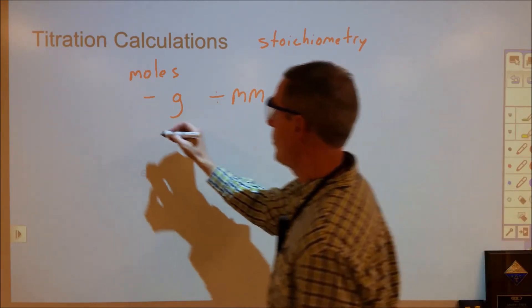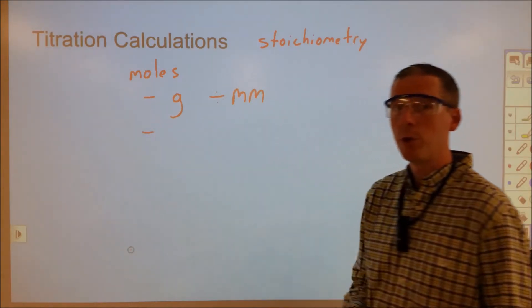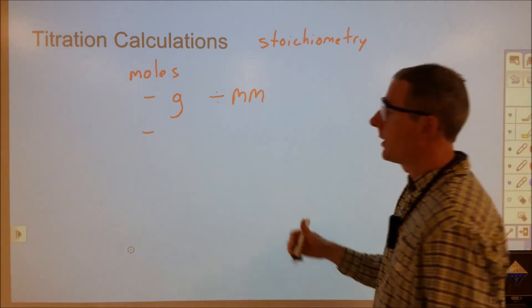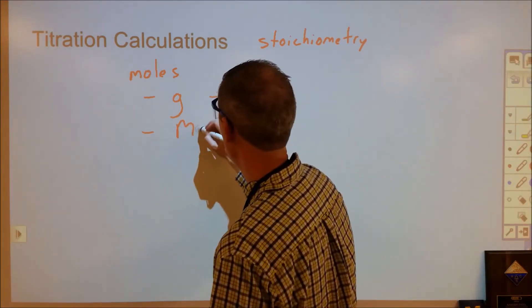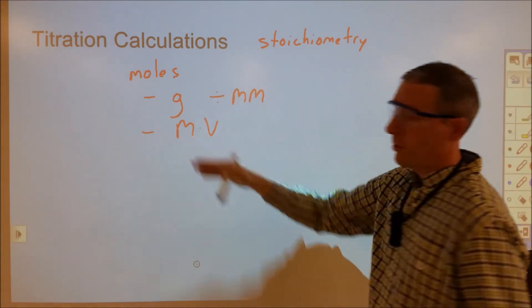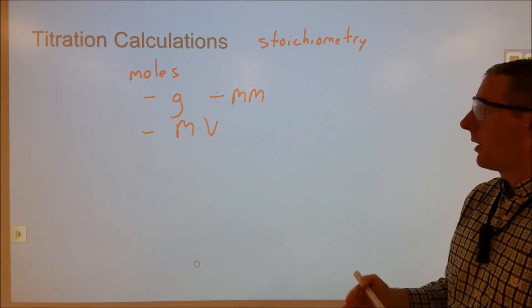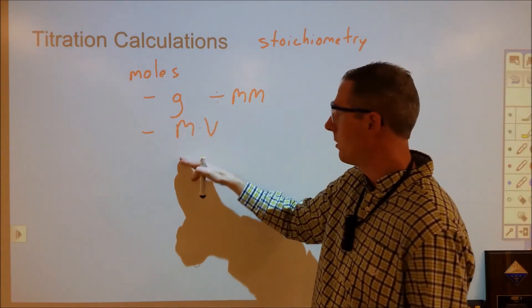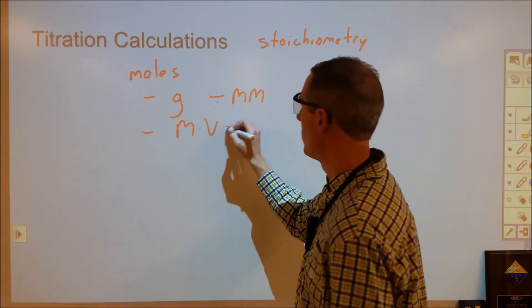The second one is in titration. We also are dealing often with solution chemistry, and so in that case we're looking at where you might know the concentration and the volume. Now the concentration in molarity, you multiply that by volume in liters, you'll end up with moles per liter times liters and you'll be given moles.